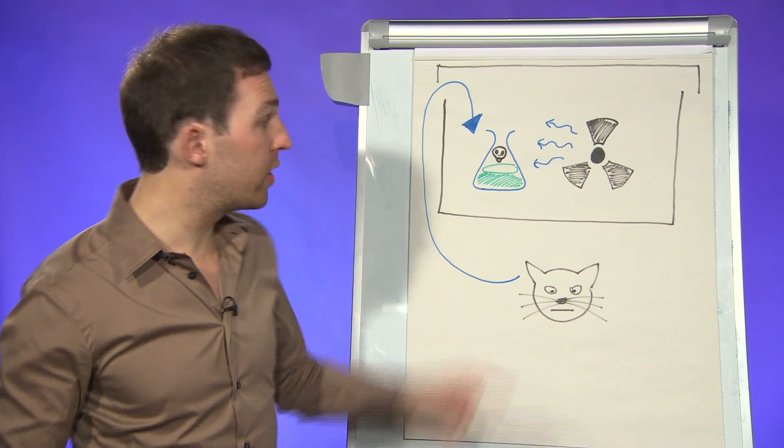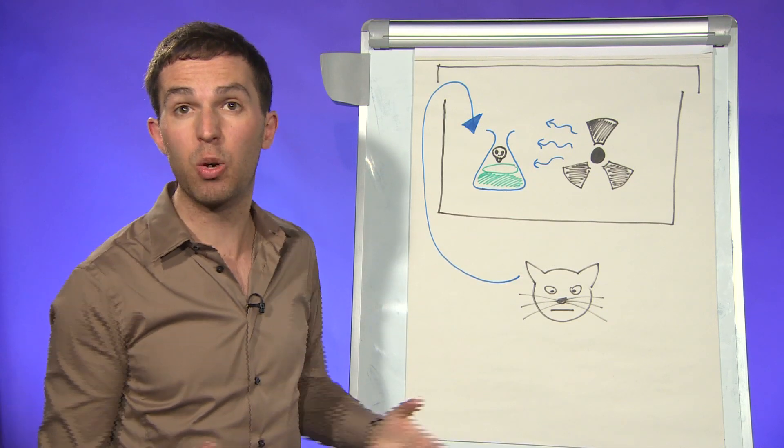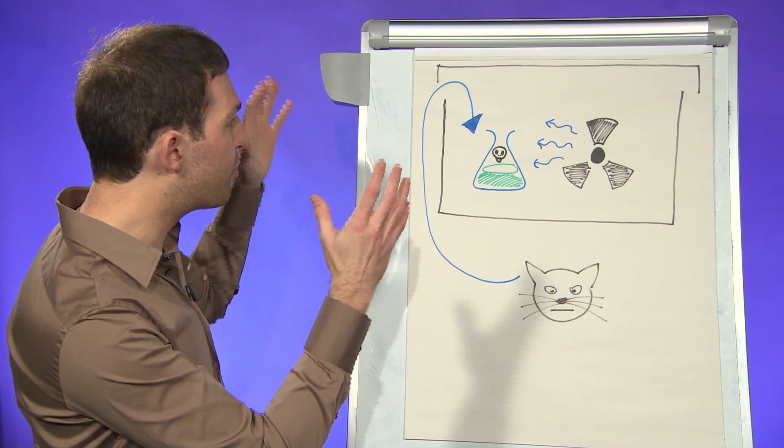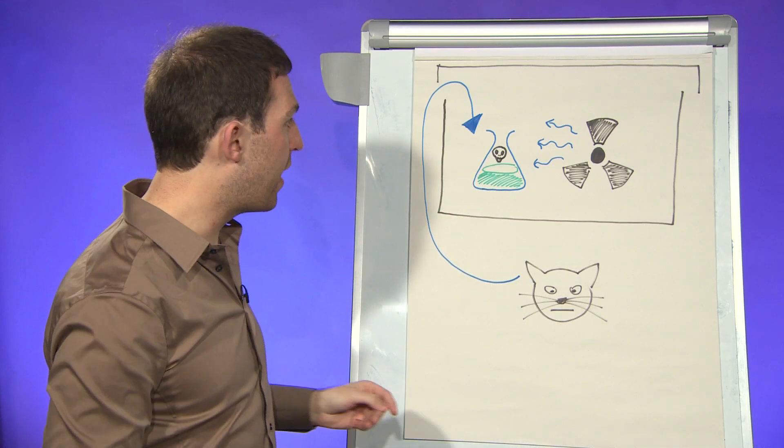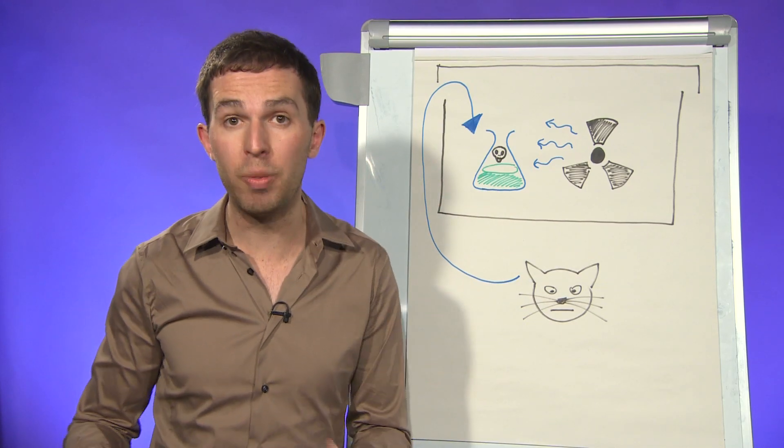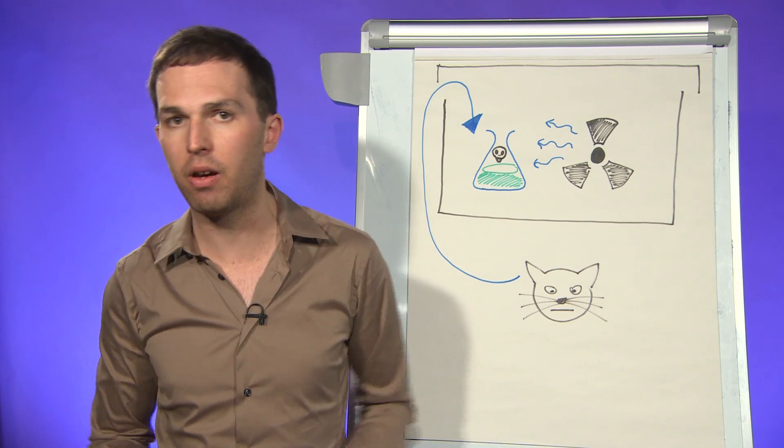Now Schrödinger argued that because the radioactive source is made of atoms and it's dictated by quantum mechanics, and because we're not observing it with the lid on top, then it will be in a state of superposition. It will be decayed and not decayed at the same time.